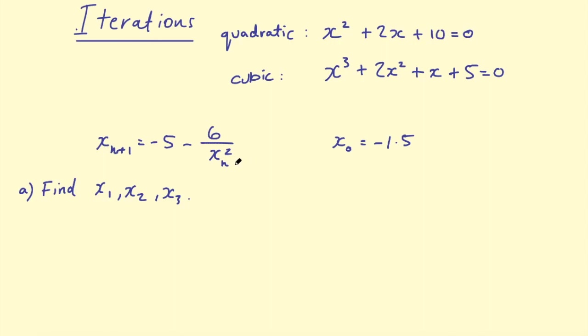We know we're using iterations. Remember what I was saying - we take the product from last year, or the solution from the first term, put it into the formula, and come up with the next term. All this formula is saying is the next term equals all of this with the last term substituted into it. So we're given x_0, so we can say x_1 equals -5 - 6 divided by x_0, which is -1.5 squared.